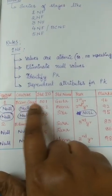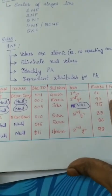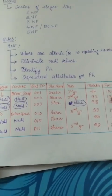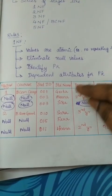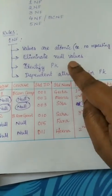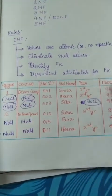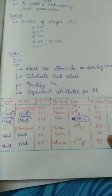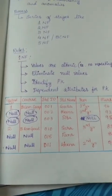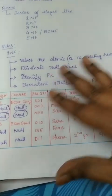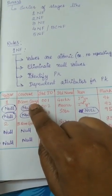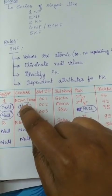For example, if Gita's record comes up two times — suppose she has paid another fee, so a new record will be added for Gita — then repetitive values will appear for Gita's record. That should be avoided. The next rule is to eliminate null values. As you can see, this is not a normalized structure; this is raw data. From this, we will start doing normalization. Any repeating values must be eliminated, and then we should eliminate null values. All null values should be filled in — for example, here it becomes 'B.Com Computers', replacing the null.